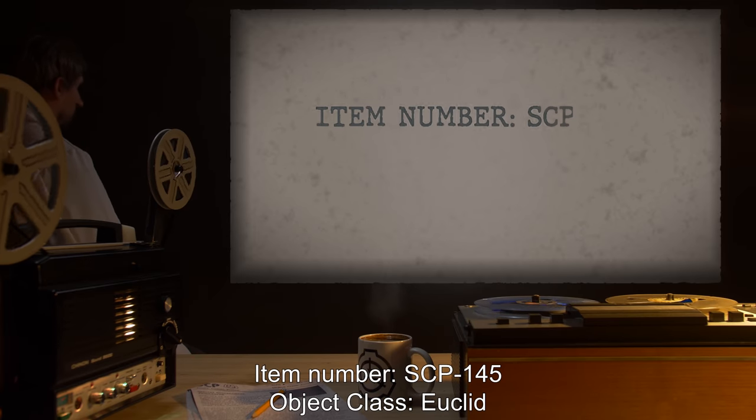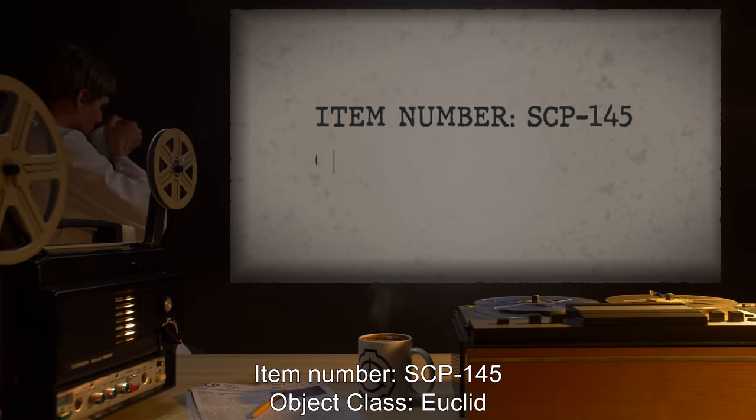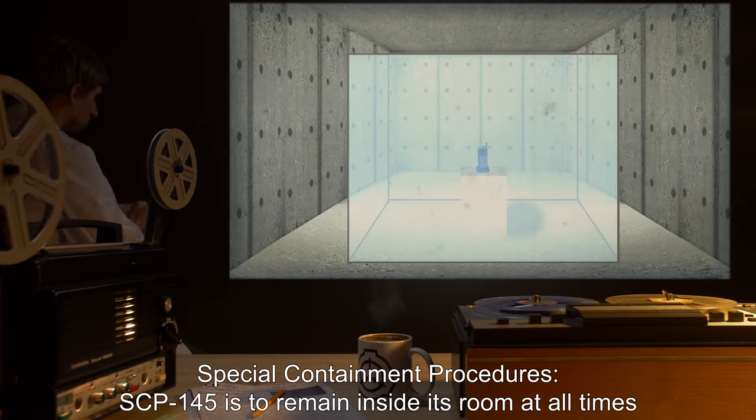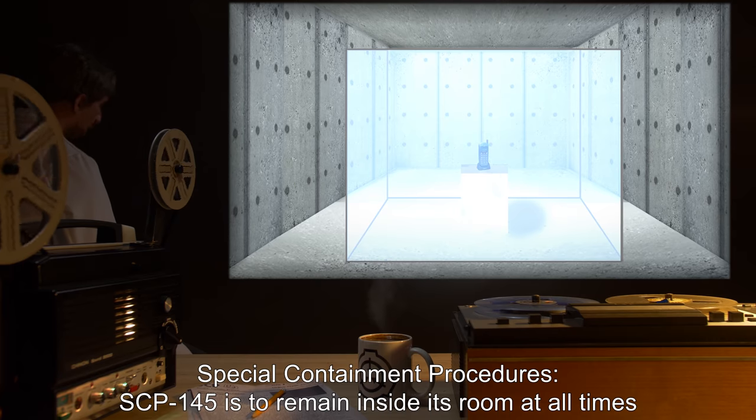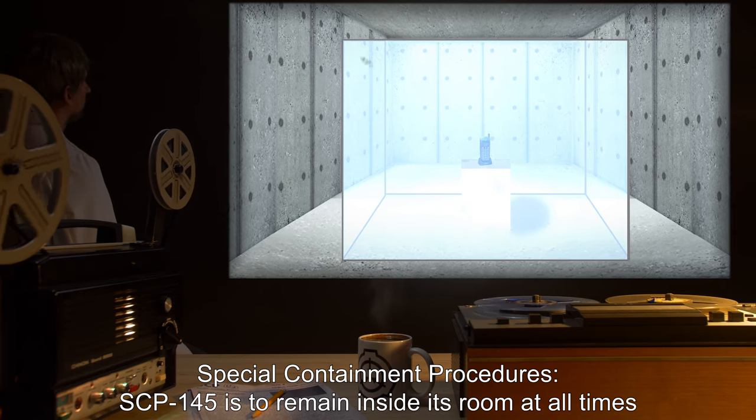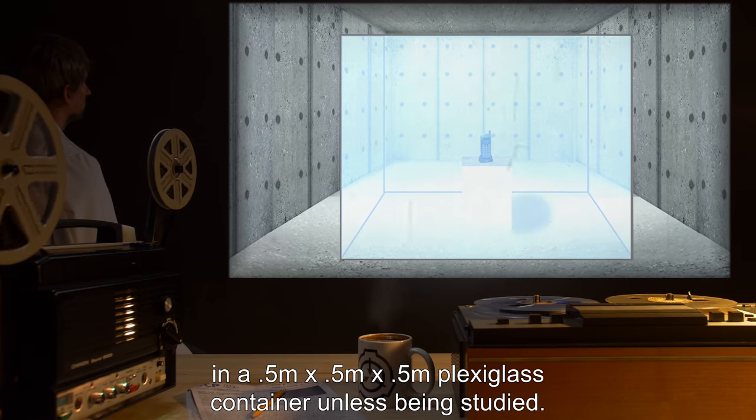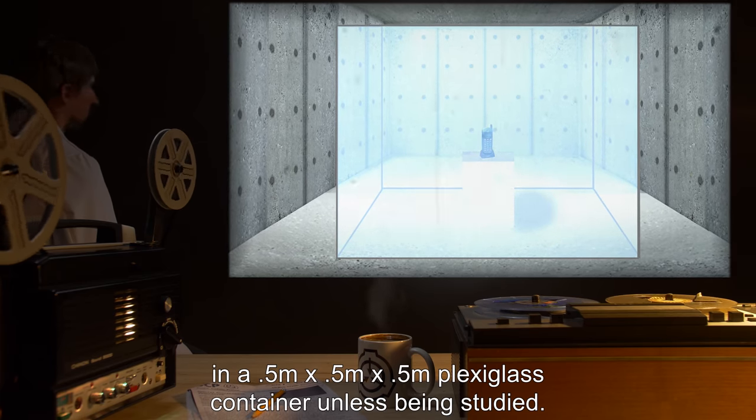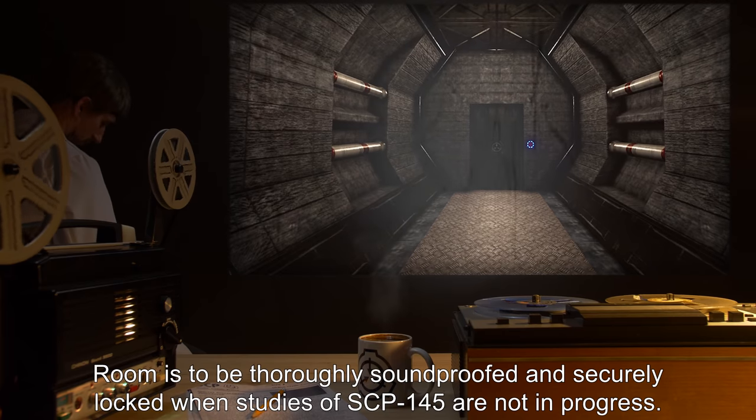Item Number: SCP-145. Object Class: Euclid. Special Containment Procedures: SCP-145 is to remain inside its room at all times in a 0.5 meter by 0.5 meter by 0.5 meter plexiglass container unless being studied. Room is to be thoroughly soundproofed and securely locked when studies of SCP-145 are not in progress.